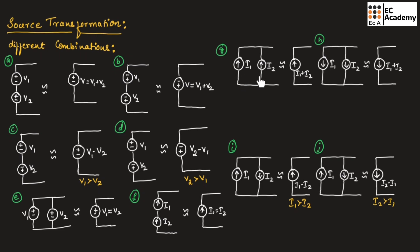If two current sources are in parallel, we need to replace them with a single current source equal to I1 plus I2, with the same direction as I1 and I2. Since both current sources are in the same direction, we replace them with a single current source equal to I1 plus I2, and the direction of this current source will be the same as I1 and I2.